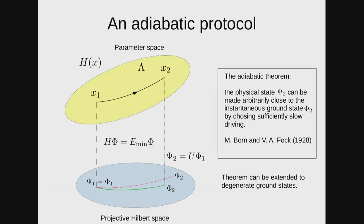So, adiabatic protocols. The idea of an adiabatic protocol is shown in this picture. Suppose I have a Hamiltonian which depends on a number of parameters, and this yellow region here is the parameter space for this Hamiltonian. Let's imagine that at some point the Hamiltonian was placed at this point of the parameter space. To each point of the parameter space you can associate a point in the projective Hilbert space of the system, which is the ground state of this Hamiltonian — denoted phi in this picture.